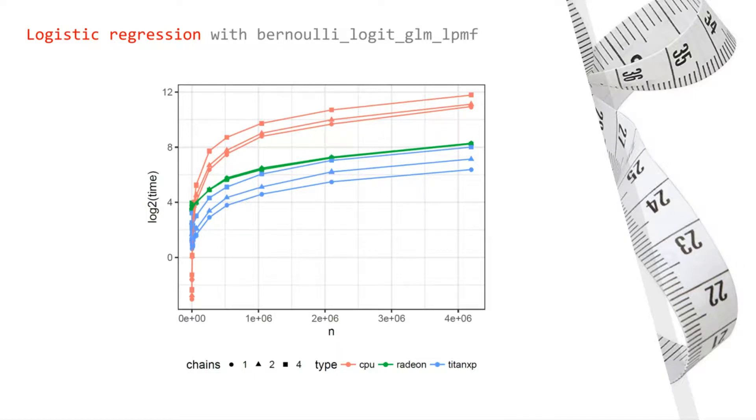This is very important as it shows that running multiple chains in parallel allows us to fully utilize all of the GPU hardware. This allows for maximum speed-ups at smaller input sizes.